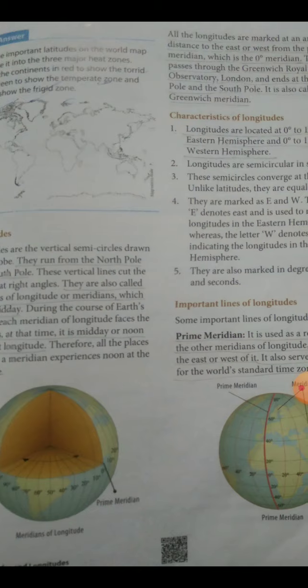Let's go to longitudes. The lines that run vertically through the poles are called longitudes. These lines run from north pole to south pole. They are called verticals. Longitudes are vertical semicircles drawn on the globe. They are also called meridians of longitudes, which means midday.